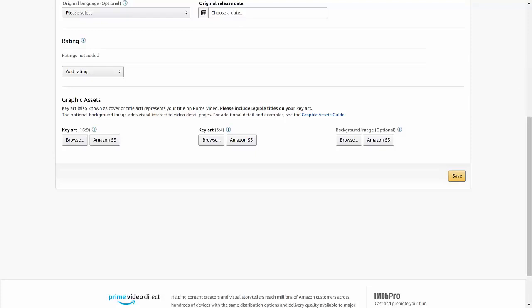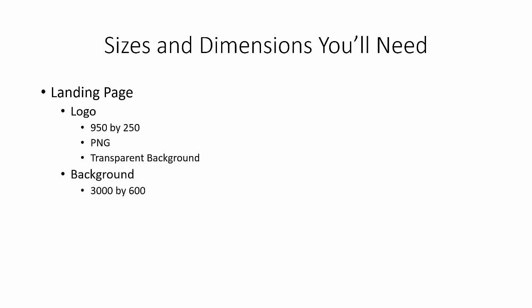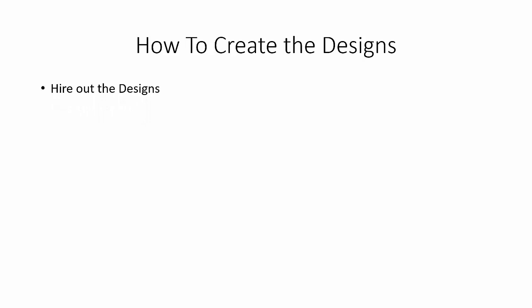In the standalone upload section, the second key art piece is 3x4. There's also a landing page you'll be given along with your videos, which will require you to have a logo. That logo needs to be 950x250, PNG with a transparent background. You're also going to have a background image at 3000x600, as well as another background image at 1920x720.